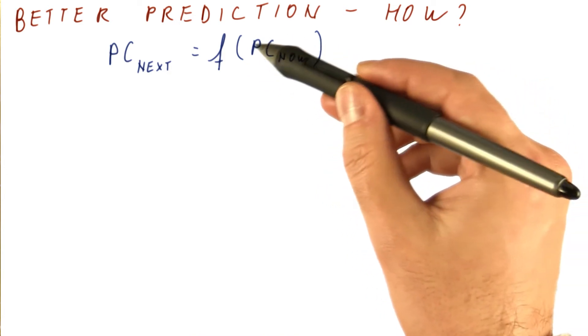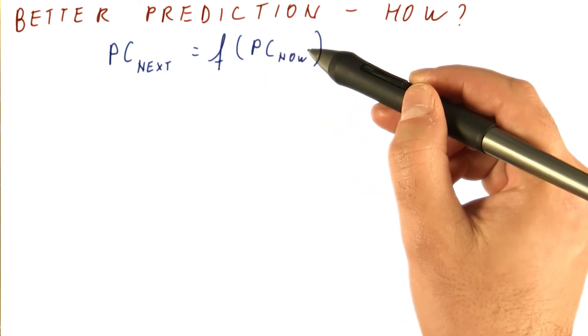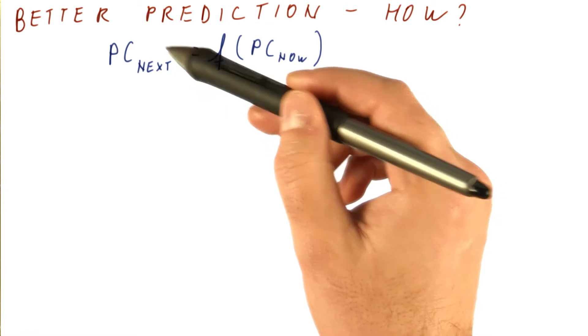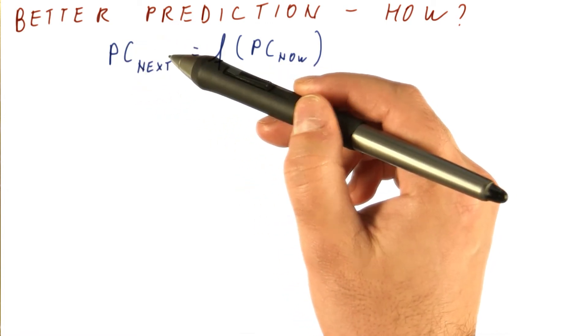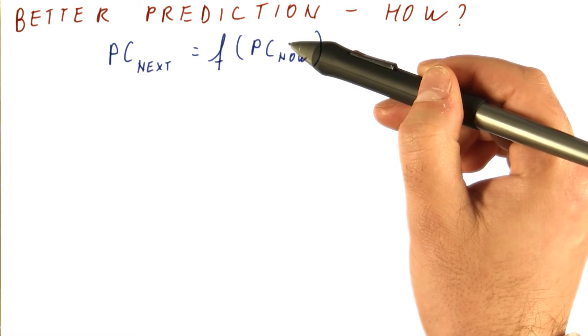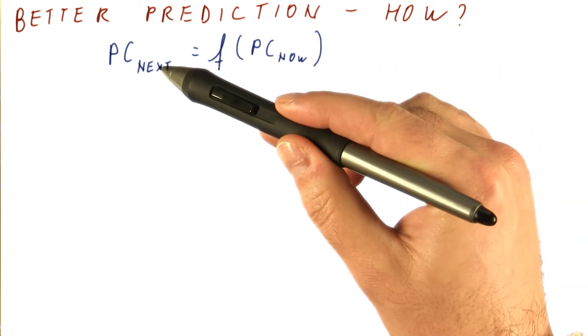So the question is, if all we know is the current PC, is there any better function that we can use to form a better prediction of what's coming next? And the answer is, if all you know is the current PC, then probably you cannot make much of a better prediction.